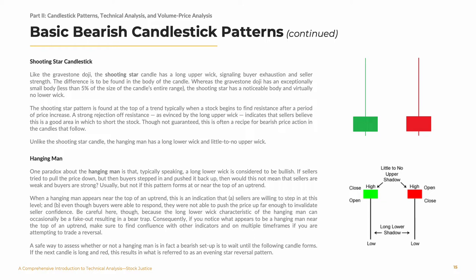Unlike the shooting star candle, the hanging man has a long lower wick and little to no upper wick. One paradox about the hanging man, though, is that, typically speaking, a long lower wick is considered to be bullish. If sellers tried to pull the price down but then buyers stepped in and pushed it back up, then would this not mean that sellers are weak and buyers are strong? Usually, but not if this happens at or near the top of an uptrend. When a hanging man appears near the top of an uptrend, this is an indication that sellers are willing to step in at this level, and even though buyers were able to respond, they were not able to push the price up far enough to invalidate seller confidence. Be careful, though, because the long lower wick characteristic of the hanging man can occasionally be a fake-out, resulting in a bear trap. Consequently, if you notice what appears to be a hanging man near the top of an uptrend, make sure to find confluence with other indicators and on multiple timeframes if you are attempting to trade a reversal.